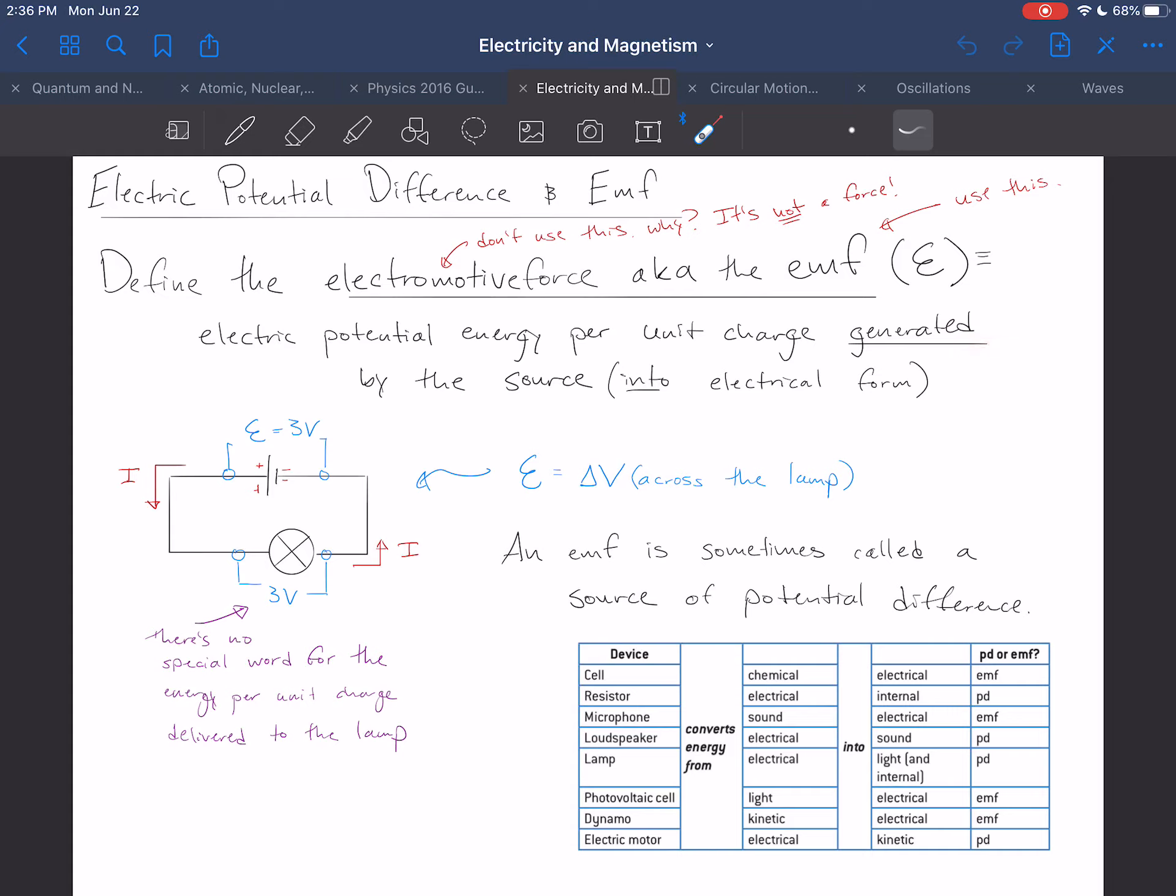Note that any electromotive force, any EMF is a potential difference. It's just more specific than that. It's like squares and rectangles. Any square is a rectangle. Any EMF is a potential difference. But not all potential differences are EMFs.